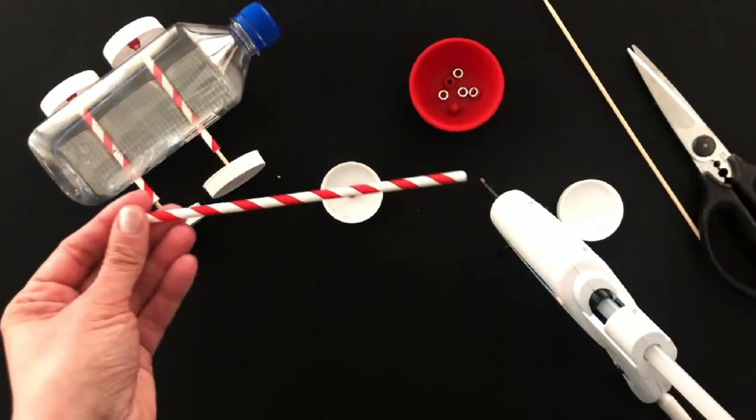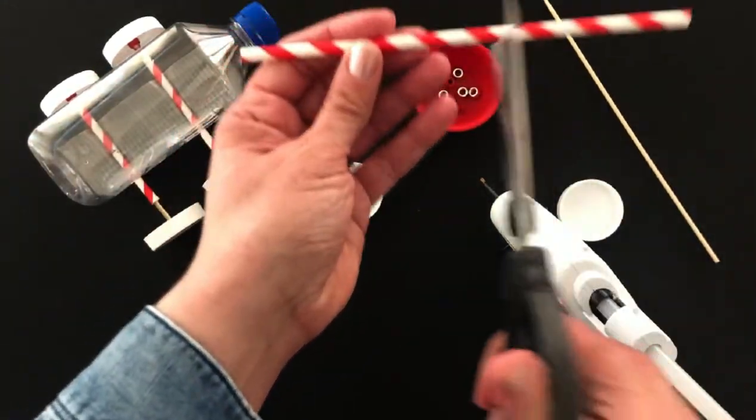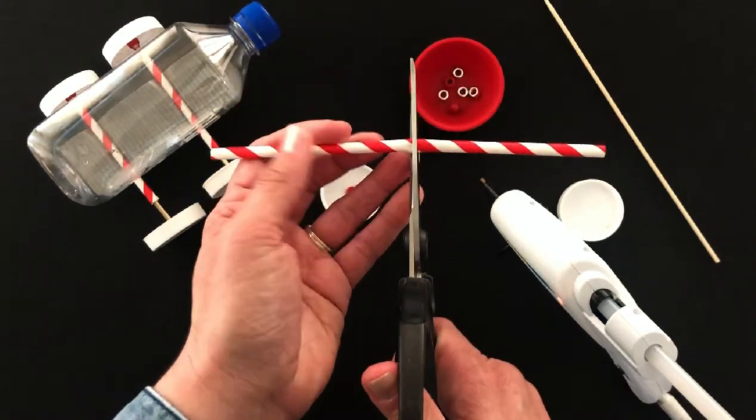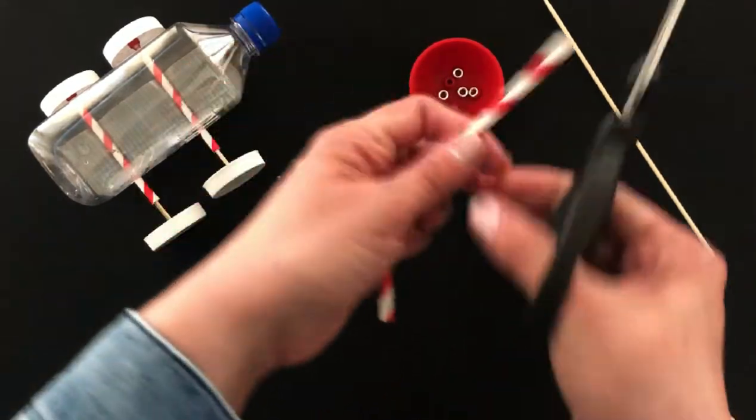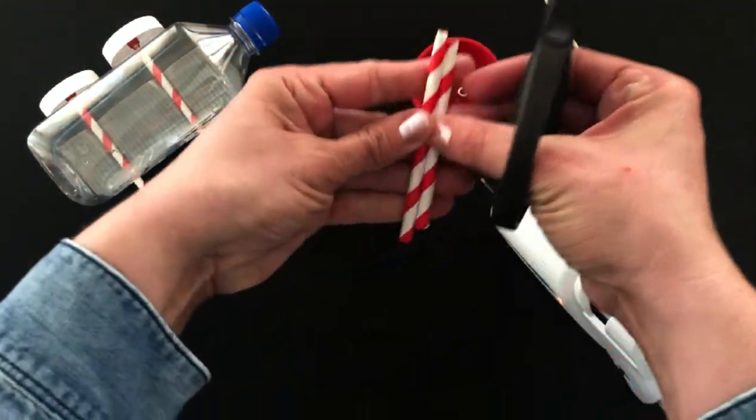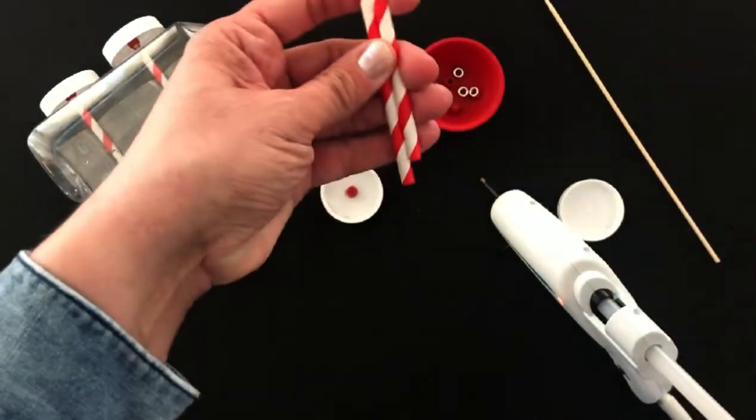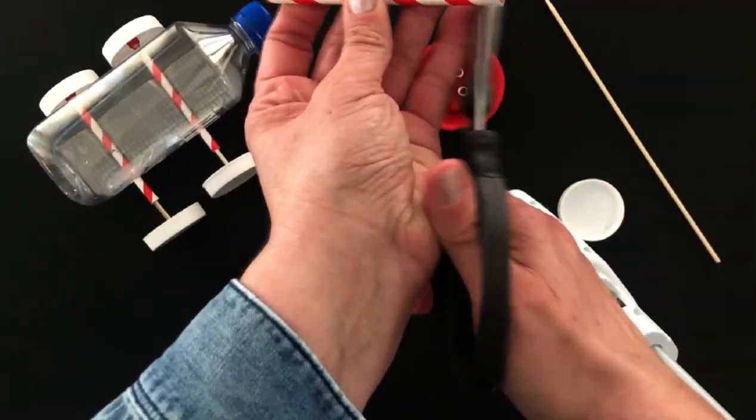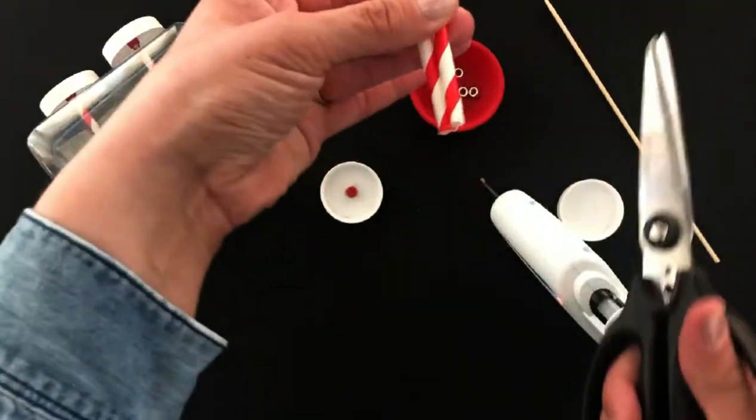Okay, the next thing you're going to do is you're going to just chop this straw in half. It's not perfect, don't stress. Now it's perfect.